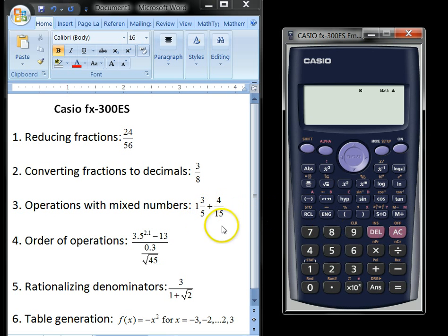To enter a mixed number, like 1 and 3 fifths, we can just hit the shift key and the fraction key. Now notice we're given a placeholder for a whole number there, so I'll put in 1, and then just hit the right cursor key, put in the numerator of 3, and then 5, and we'll go ahead and add another fraction to it. I don't need the shift key there because this is a proper fraction.